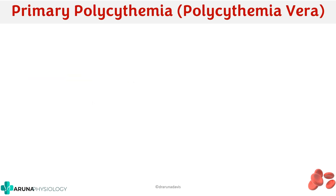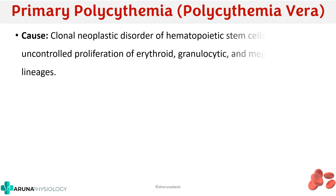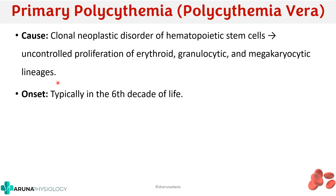In primary polycythemia, the major cause is a clonal neoplastic disorder of hematopoietic stem cells, which leads to uncontrolled proliferation of erythroid, granulocytic, and megakaryocytic lineages. Basically, there is a mutation producing uncontrolled division of the primordial cells of all cell lines inside the blood. The onset is typically in the 6th decade of life.